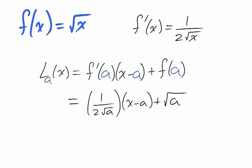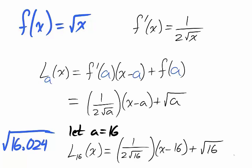Now we can use this linearization to provide a reasonable estimate of the square root of rational values. Take for example the square root of 16.024. The nearest value to 16.024, for which we can quickly calculate a square root, is 16.